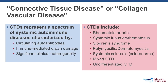So first we have to address connective tissue disease, or a synonym, a commonly used alternative phrase, collagen vascular disease. These are really diseases that represent a spectrum of diseases which are often systemic. They're autoimmune in etiology and they're often characterized by the presence of autoantibodies, significant organ damage, which again is immune mediated.